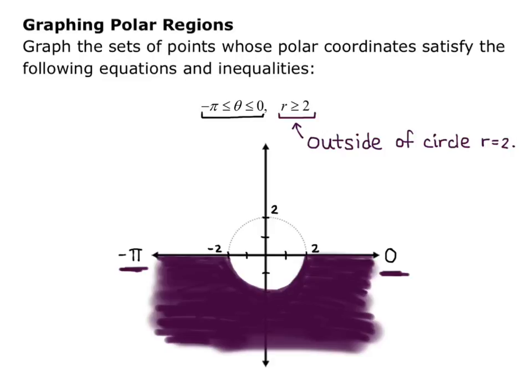So remember for polar coordinates, you always have an r and a θ. r is your distance from the origin, θ is the given angle, and you can use those to plot points and graph regions in polar. We'll see you later.